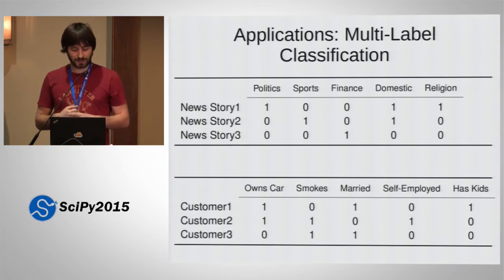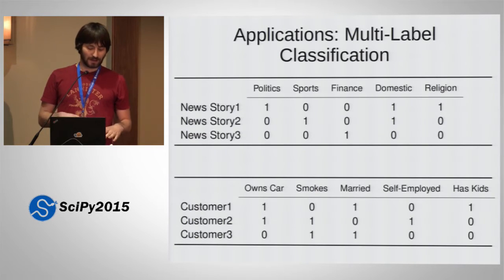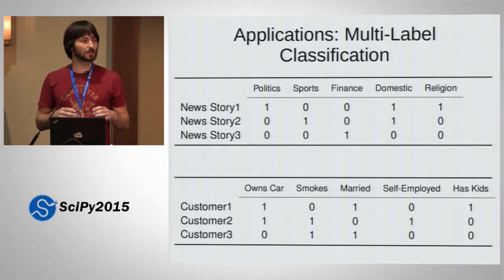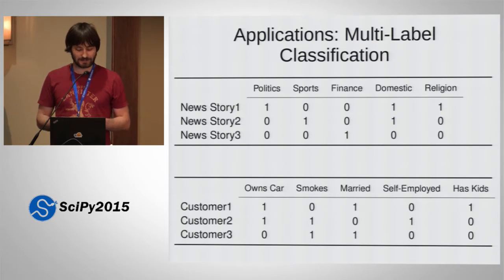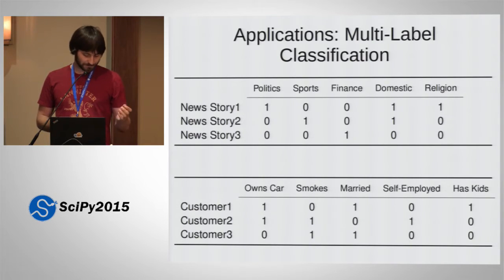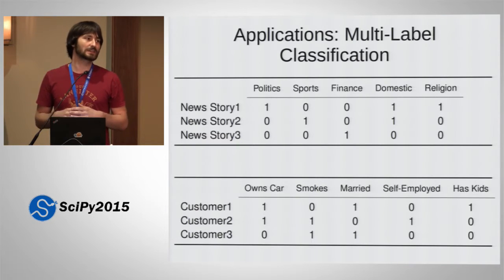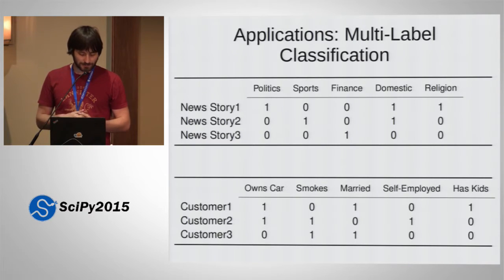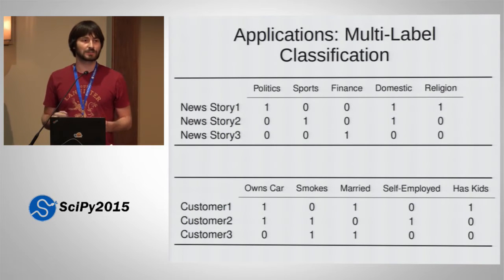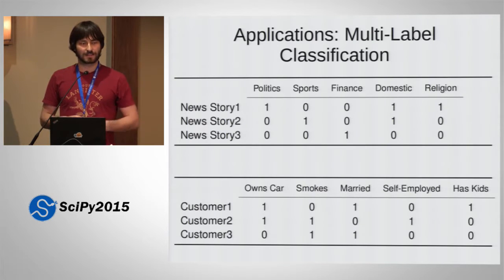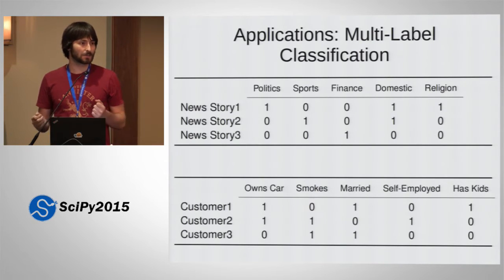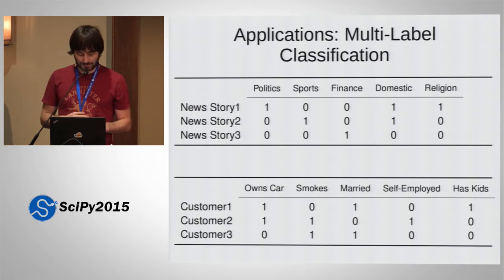The other extreme would be saying I have five zeros or ones, and I can look at each of the possible combinations as a single class. But then there are very many classes, and if I have ten topics, I have two to the ten possible classes. I would need a lot of data to do this multi-class classification. Also, you could only predict combinations that you saw in the training data. So we want to do something in-between that allows us to model correlations between the output classes, but still be able to learn this from a small enough sample data set.